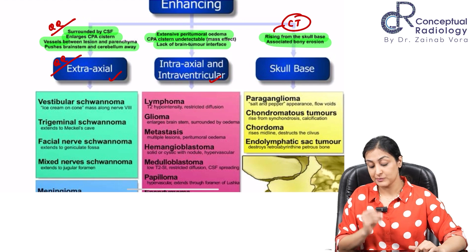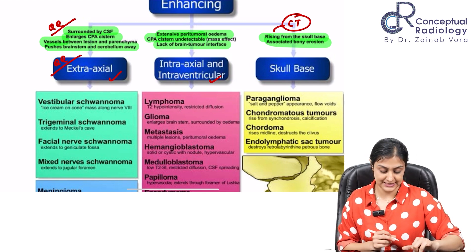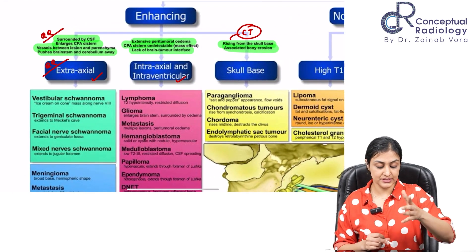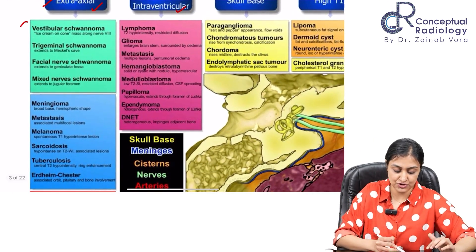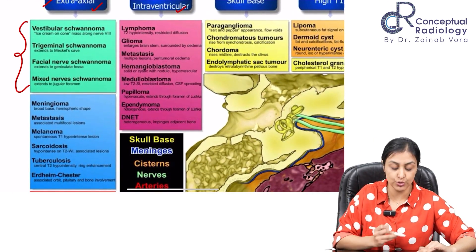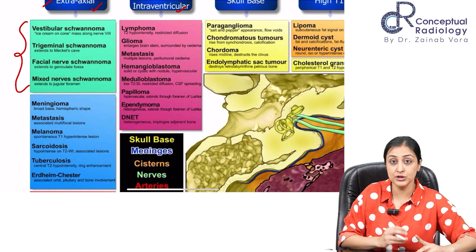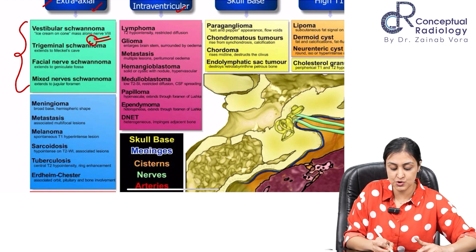For skull base primary lesions, we'll see bony expansion and associated bony erosions — this is where CT becomes very handy. For extra-axial and intra-axial categories, MRI alone is sufficient, but for skull base lesions we need to accompany it with a CT scan.